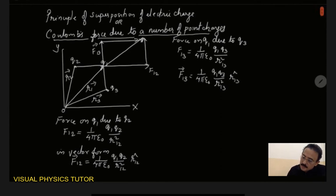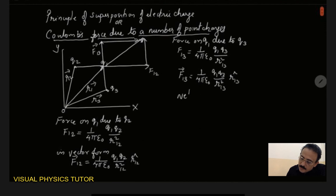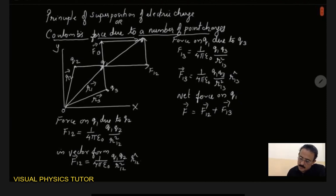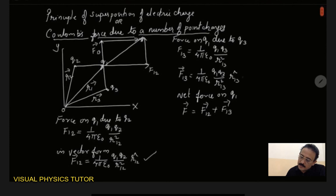That means the net force on q1 will be, we can write this F vector is equal to F12 vector plus F13 vector. So now we can substitute this equation and this equation and considering for n number of point charges.